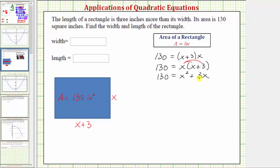Because we have a quadratic equation, let's set it equal to zero and see if we can solve by factoring. So we'll subtract 130 on both sides. 130 minus 130 is zero, so we have zero equals x squared plus three x minus 130.